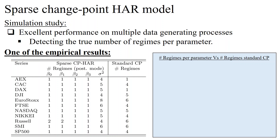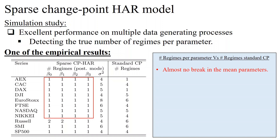Regarding the empirical section, we investigate from in-sample and out-of-sample exercises whether the HAR model is sufficient to fit the data, or if a change point model with few time-varying parameters is needed. For instance, we show that there are almost no breakpoints in the mean parameters of the HAR dynamics for the 11 realized variance series.